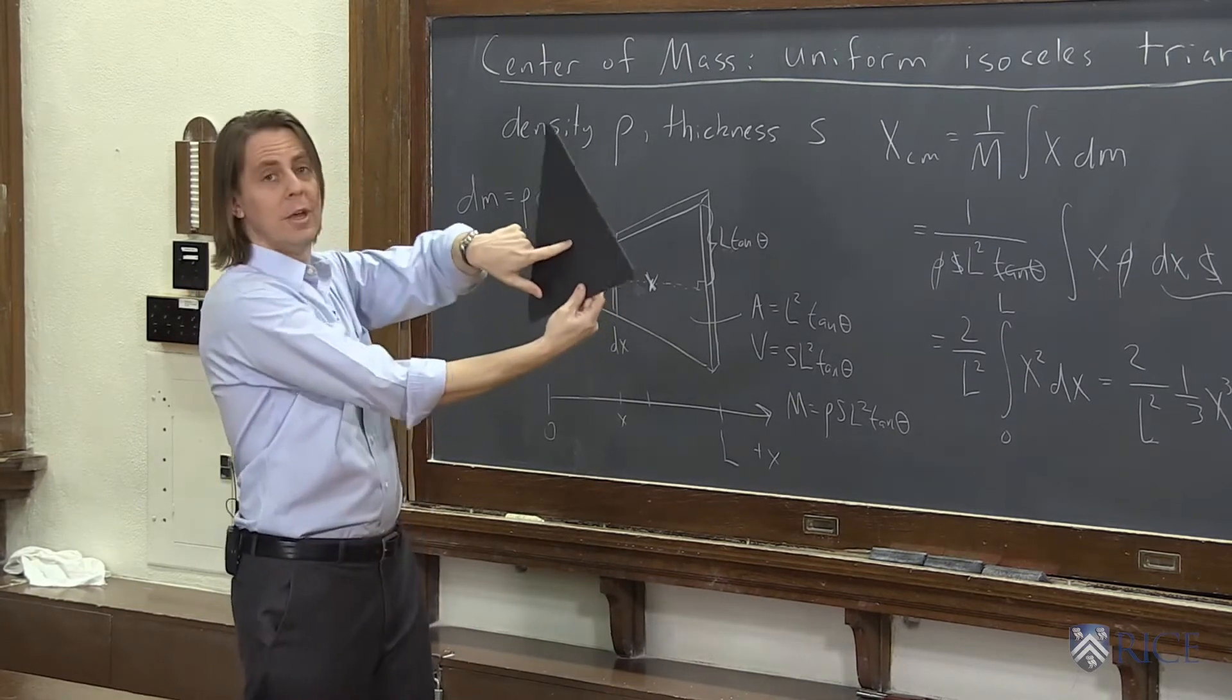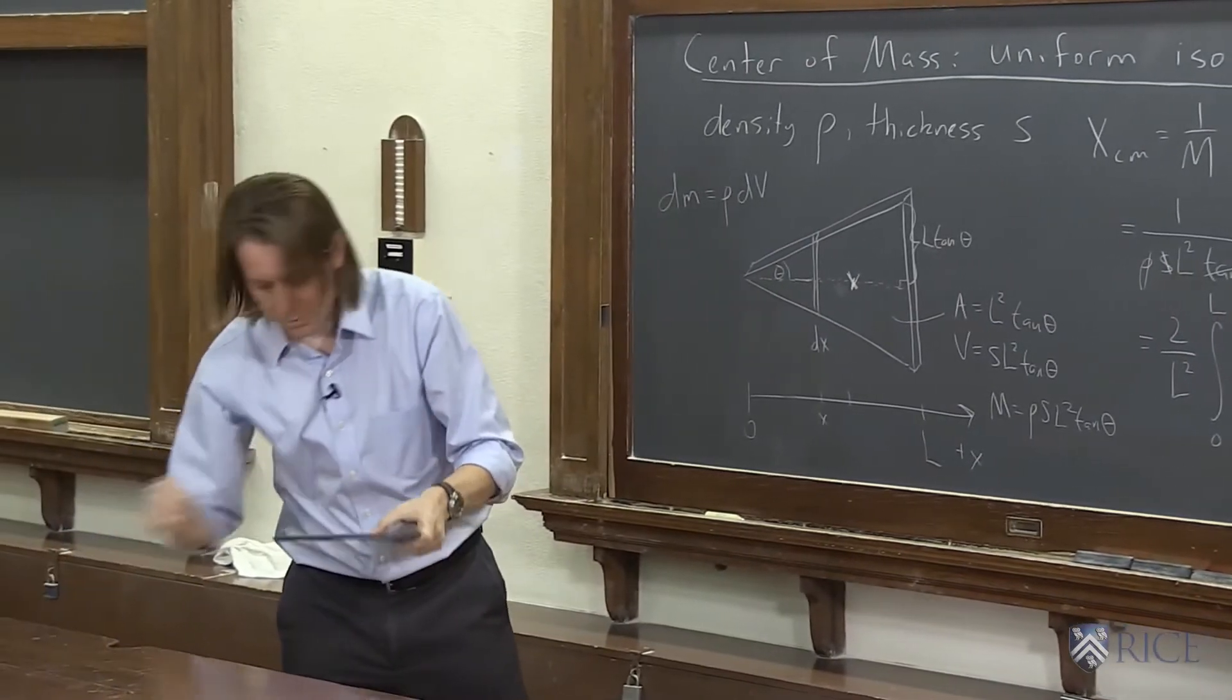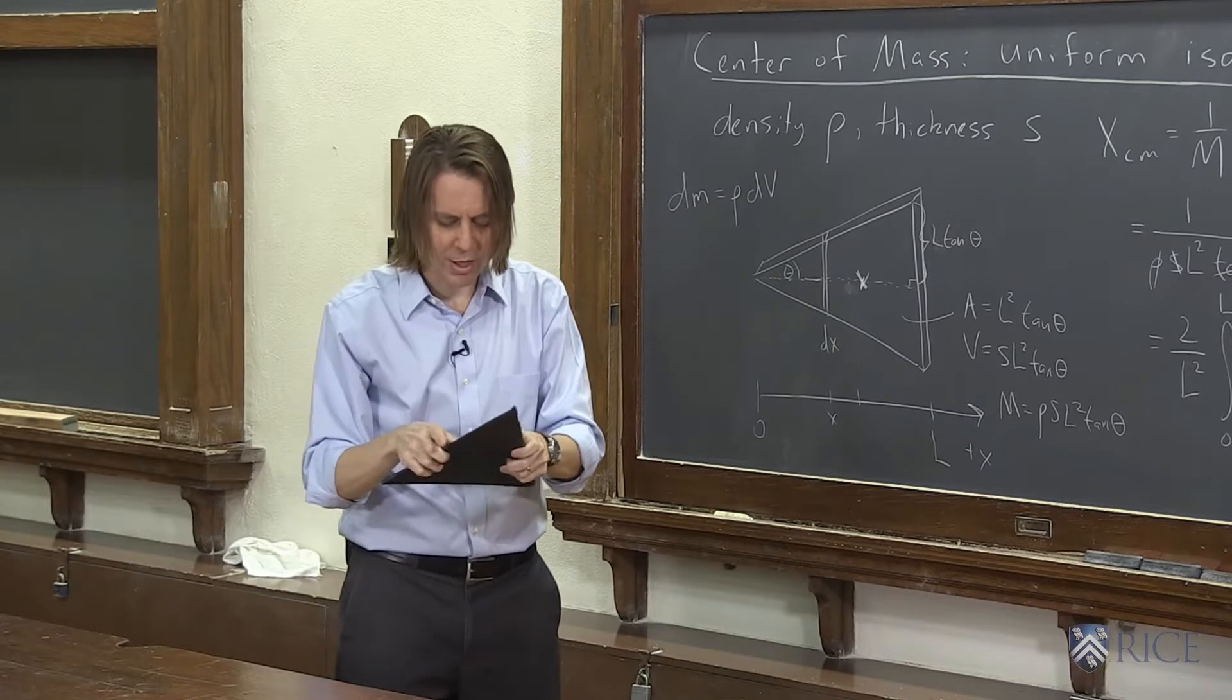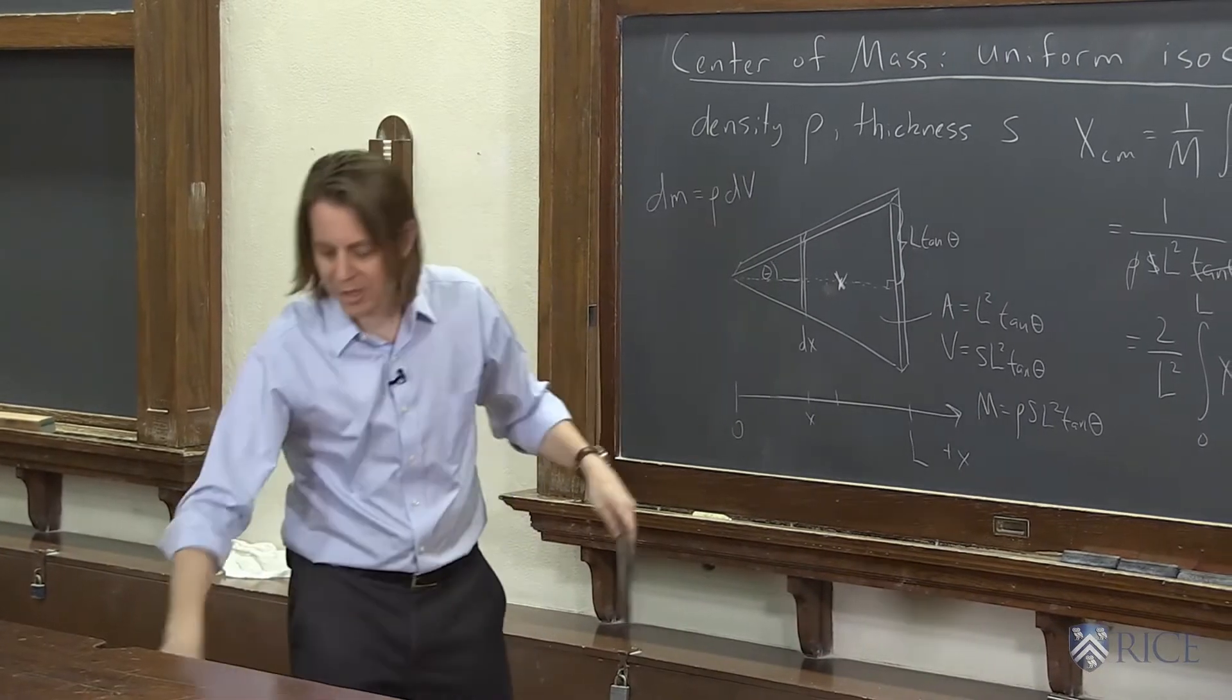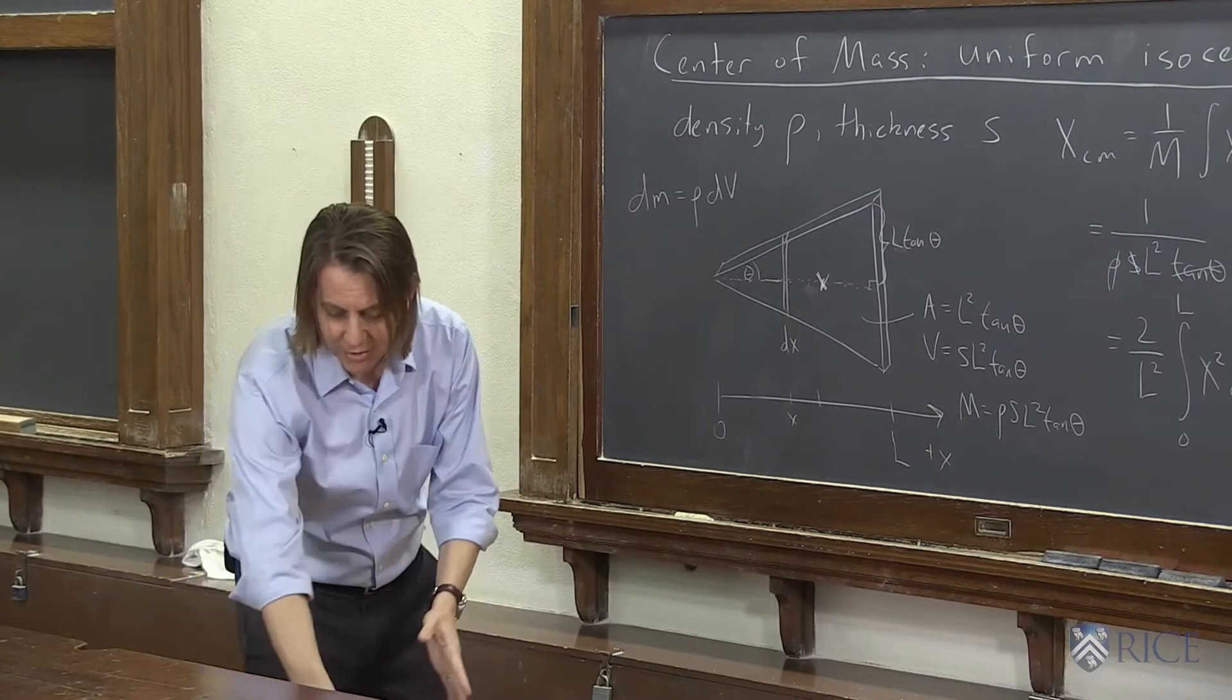And yeah, that's about two-thirds L. So I'm going to go ahead and mark it because now we're going to get wild here. I've got my isosceles triangle with its center of mass, and I've got my rod with its center of mass, and then we have to do it.